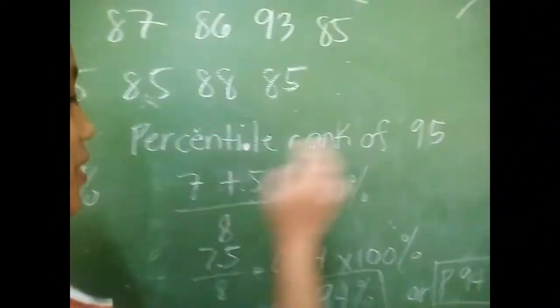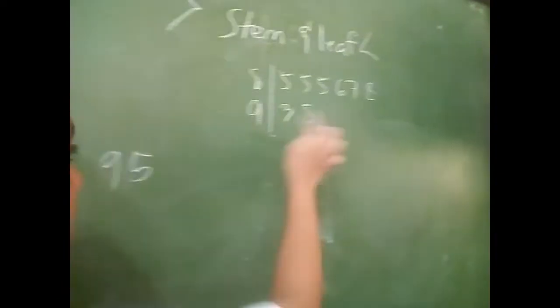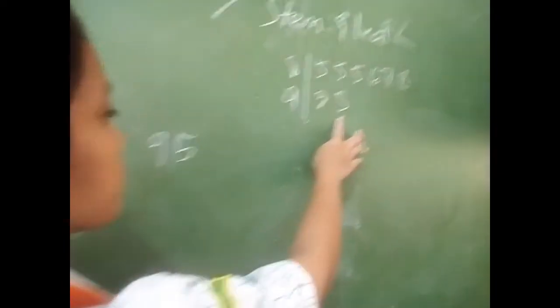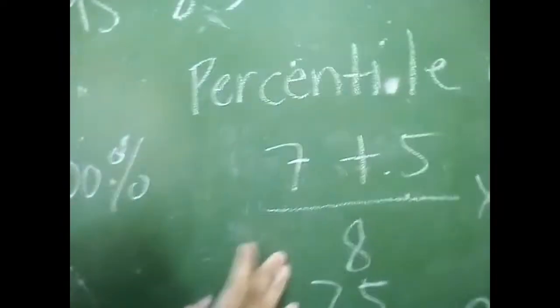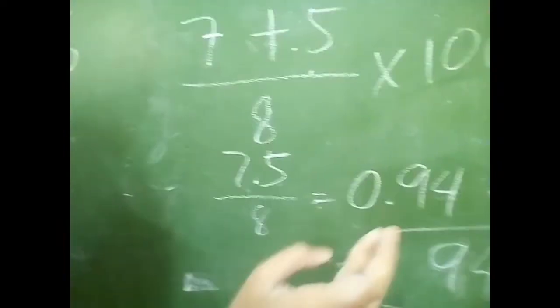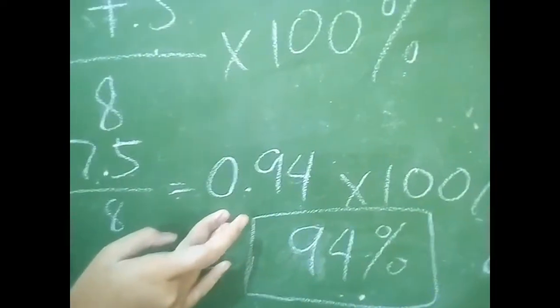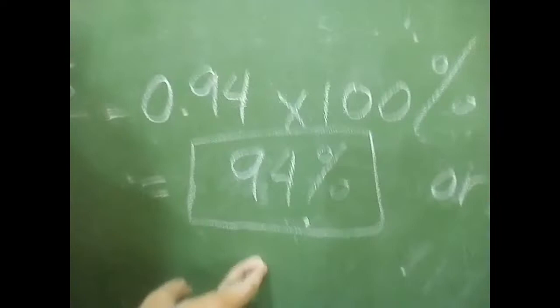So we have the percentile rank of 95. Counting through the data: 1, 2, 3, 4, 5, 6, 7, 8. The preceding count is 7. So 7 plus 0.5, divided by 8, times 100%, equals 7.5 divided by 8, which equals 0.94 times 100%, or P94.